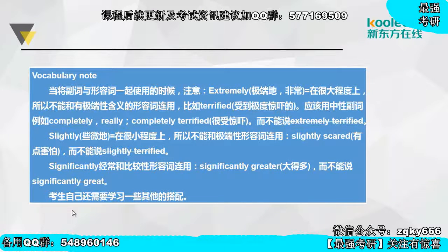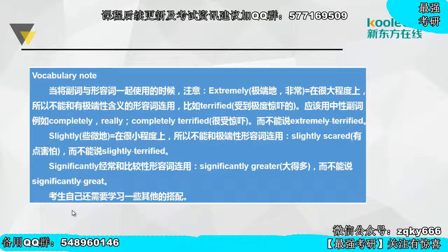Vocabulary note：形容词和副词联用时，要注意形容词和副词有没有极端性的含义。比如extremely是极端的，terrified也是受到极度惊吓的意思，所以不能说extremely terrified——一是语意重复，二是terrified本身不存在程度，它已经是一种完全的状态了，不像scared还有程度区分。所以不能用extremely或slightly这种程度性副词修饰terrified，可以说completely terrified或really terrified。